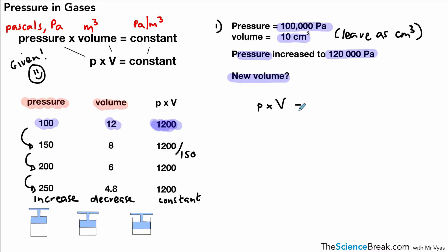Let's do the calculation. Pressure times volume is a constant. What is the value of that constant? It's 100,000 times 10, which gives us one million or 10 to the power 6. That's our constant.